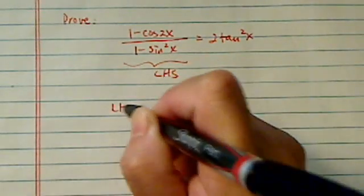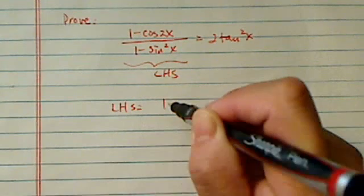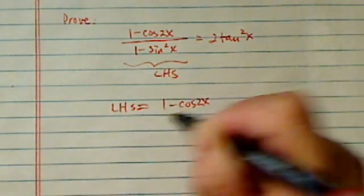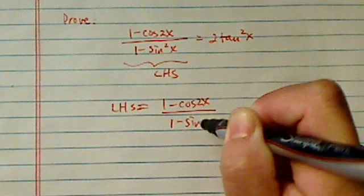This is left hand side. Left hand side is equal to 1 minus cosine of 2x divided by 1 minus sine square x.